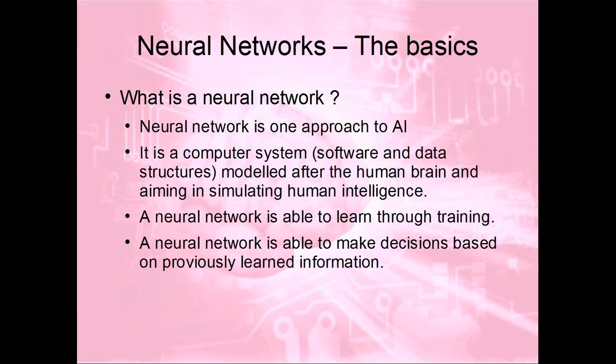Today we're only going to talk about the subset which is neural networks — we're going to explain the basics. A neural network is a subset of artificial intelligence. It consists of two things: software and data. The software and data together try to model something like the human brain and simulate human intelligence. Very importantly, the neural network is able to learn based on data you give it.